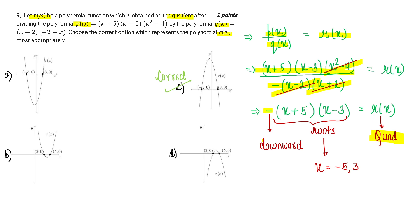Negative sign here, so it will be a downward parabola and roots are minus 5 and 3. So after gathering all these information, let's figure out the graph.